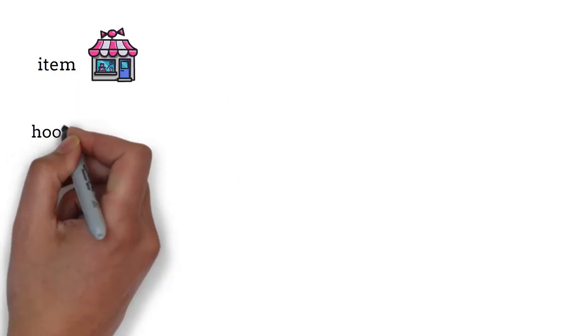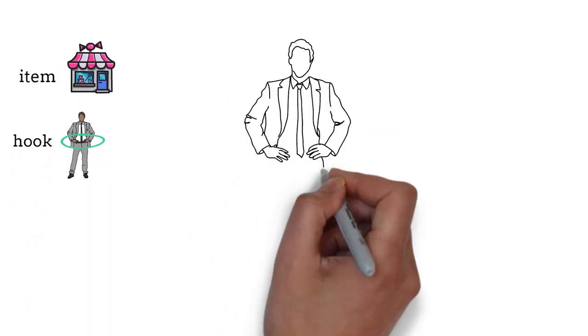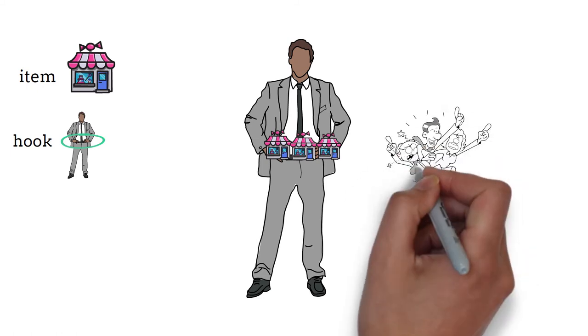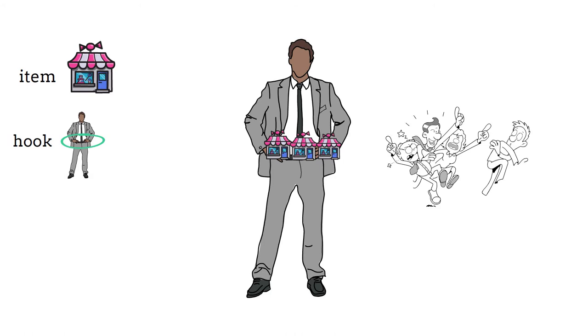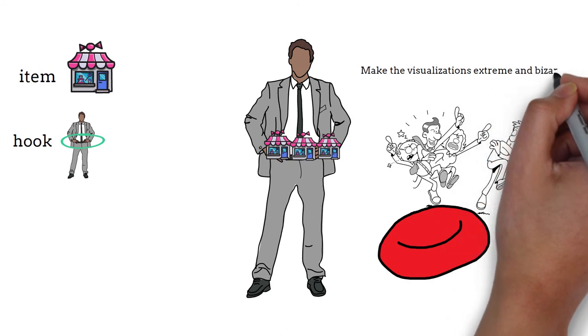The next item is the shop. Visualize there are millions of shops on your hips. All the shop owners are fighting trying to sell their goods. There is blood everywhere. Make the visualization extreme and bizarre.